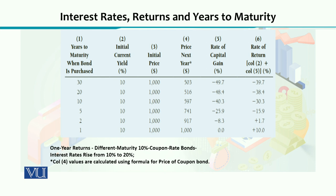In order to explain the relationship among these three variables, I am going to show you a table in which we have taken into account different bonds with different maturity periods. Maturity period means the bond can have a maturity period of one year, two years, five years, 10 years, 20 years, or 30 years. They are going to offer a certain coupon rate on a financial instrument for this many years, which is given as the time to maturity.